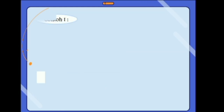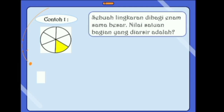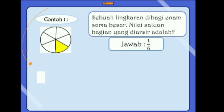Selanjutnya Miss kasih contoh soal ya teman-teman. Sebuah lingkaran dibagi 6 sama besar. Nilai pecahan dari bagian yang diarsir adalah? Perhatikan ya — nilai yang diarsir, yang Miss beri warna kuning, yang Miss lingkarin itu bagian yang diarsir. Yang diarsir berapa? Ya benar, satu. Maka jawabannya adalah 1/6. Satu adalah bagian yang diarsir, dan enam adalah lingkaran yang dibagi menjadi enam sama besar.